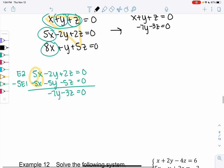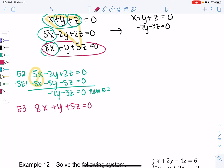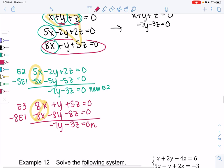Let's find new E3. E3 is 8x plus y plus 5z equals zero. I'll subtract the first one times 8 so the x's eliminate. Minus 8x minus 8y minus 8z equals zero. The x's eliminate and we get minus 7y minus 3z equals zero for my new E3.